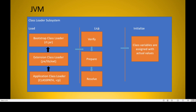Once the class is loaded into memory, the link phase starts. The link phase has three steps: verify, prepare, and resolve. Even though they are depicted here as sequential, they may run in parallel or their execution may overlap, depending on the JVM implementation. In the verify step, the JVM checks whether the bytecode is valid Java bytecode and whether it can be interpreted by the Java interpreter.